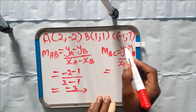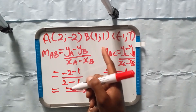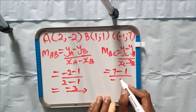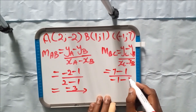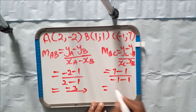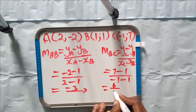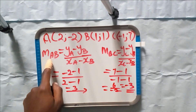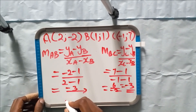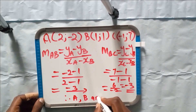Substituting for gradient BC: y_C is 7 minus y_B which is 1, all over x_C which is -1 minus x_B which is 1. That gives us 6 over -2, which equals -3. The gradient of AB equals the gradient of BC, therefore we can say points A, B, and C are collinear.